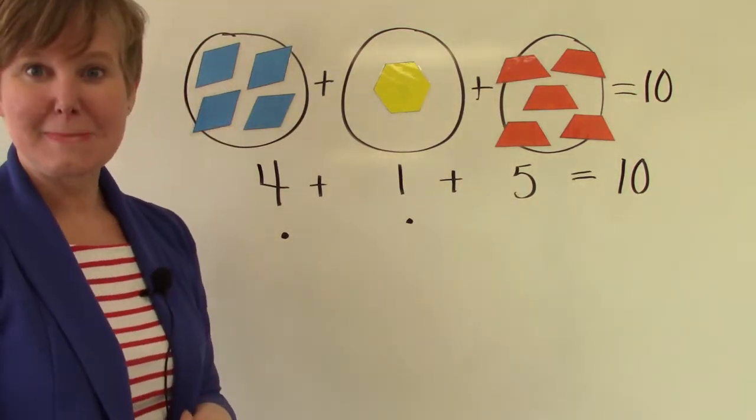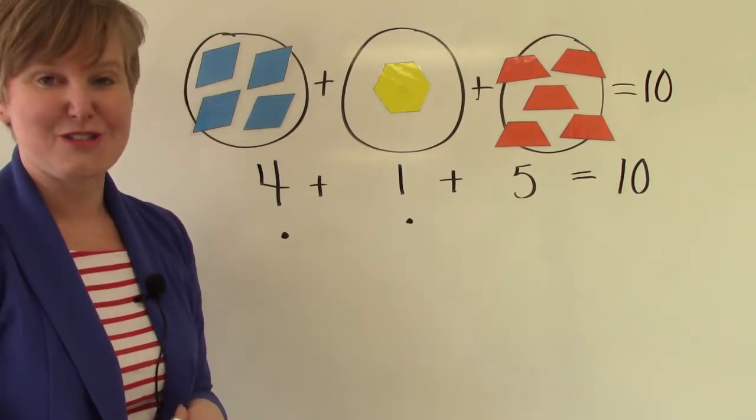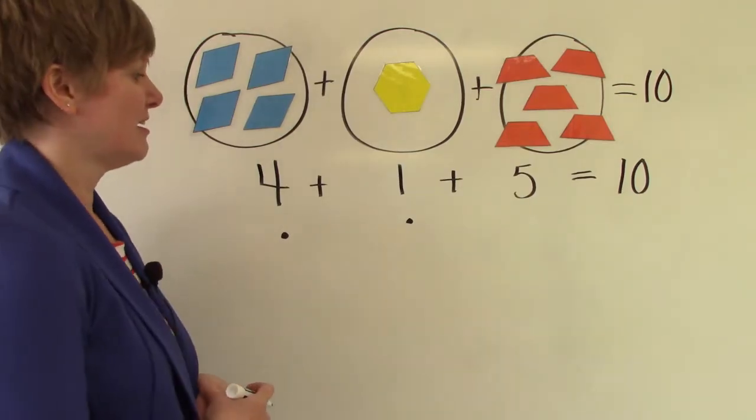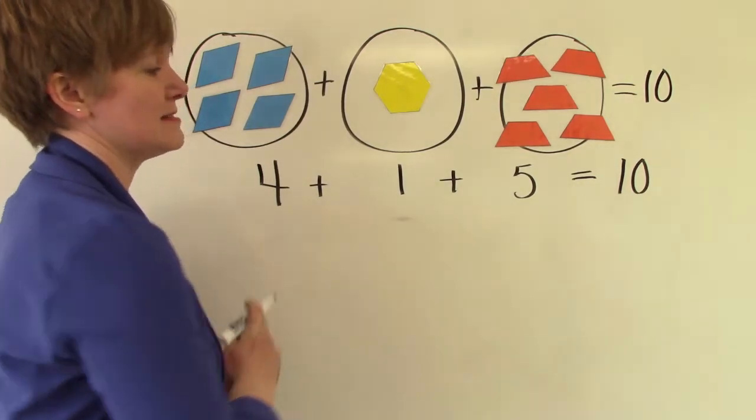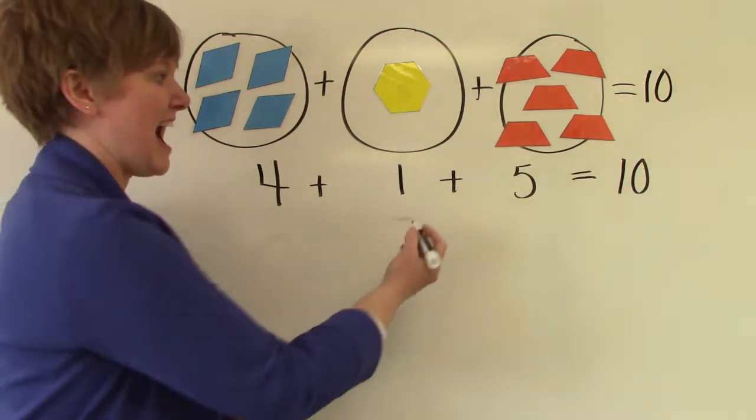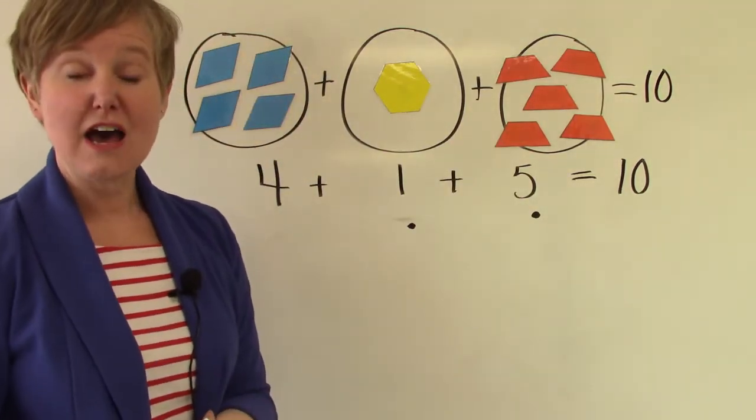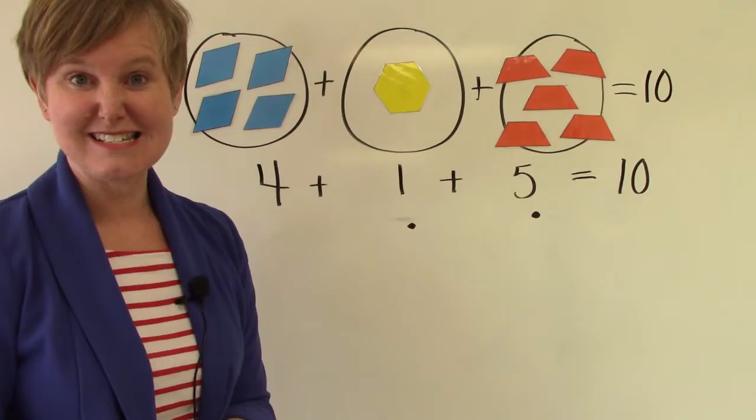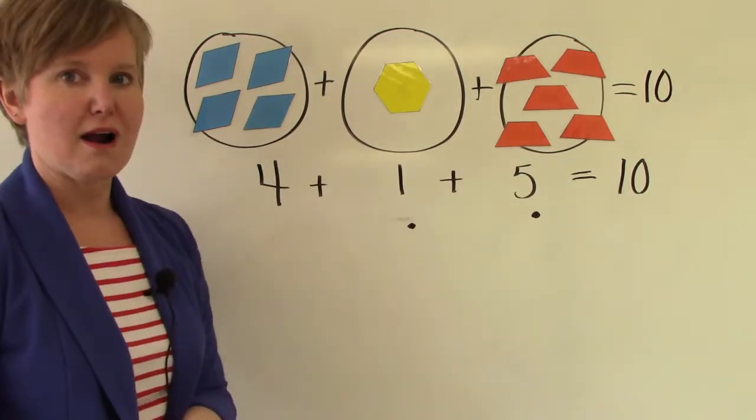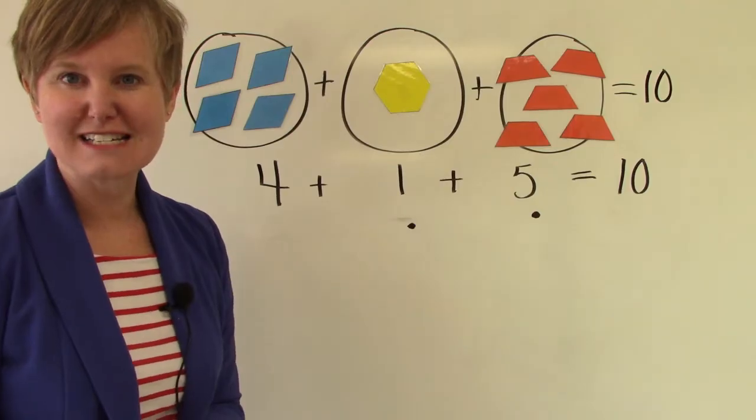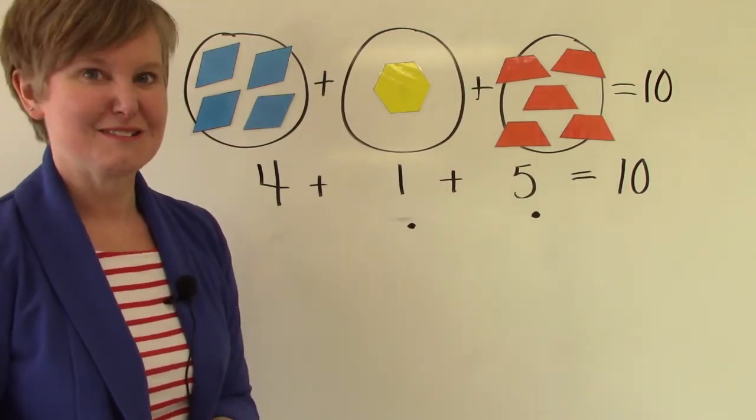I wonder if we'd come up with the same answer if we added them in a different order. Let's try it. Let's not add our four and our one together first. Let's add our one and our five together. Five plus one is six and if we have six plus four, well that's another one of our facts, isn't it?